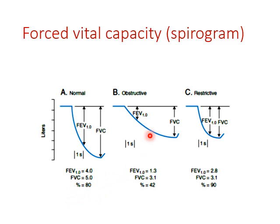This is the normal value. In obstruction, there is a reduction in the forced vital capacity, but the reduction in FEV1 is worse, so when you take the ratio it becomes way less than the normal 80% — this will vary depending on the degree of obstruction. In restrictive lung disease, there is a decline in both FEV1 and vital capacity, but the decline is proportional, meaning the FEV1 to FVC ratio could be similar or slightly larger than normal.